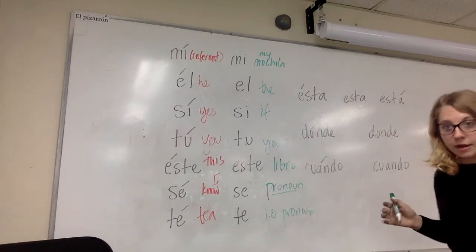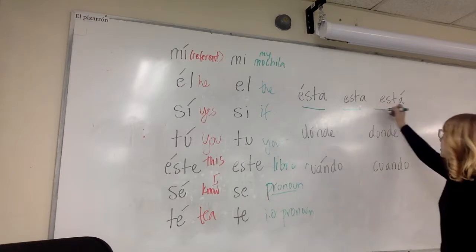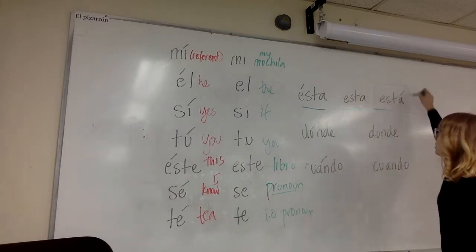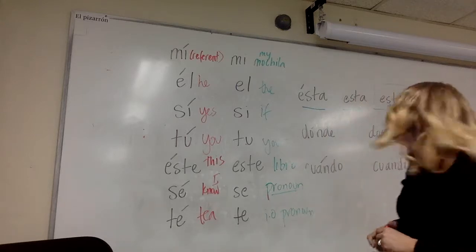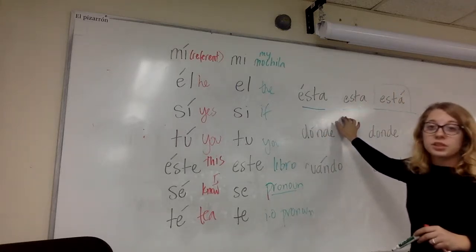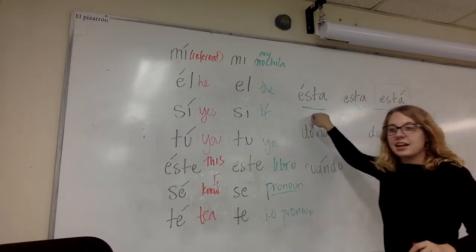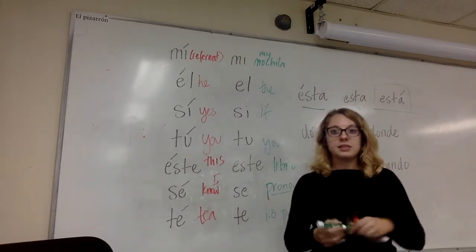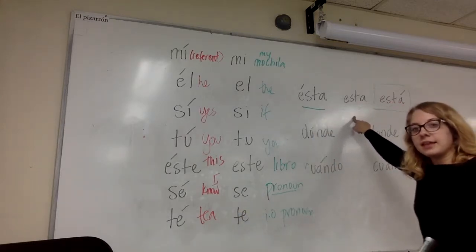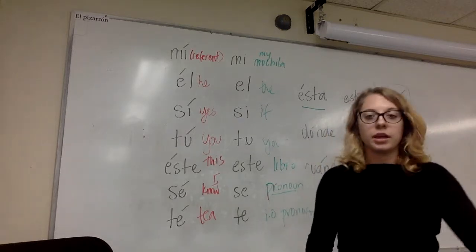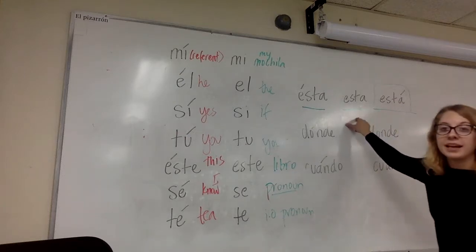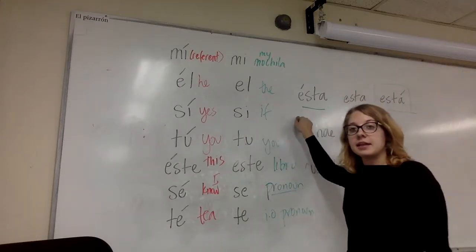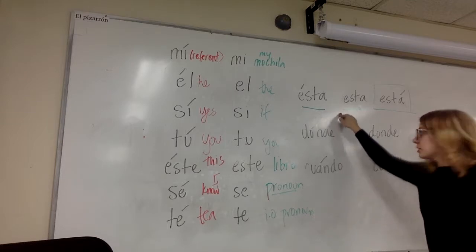Let's look at a triple threat: 'está,' 'ésta,' and 'esta.' There is actually a difference in pronunciation. 'Está' with an accent on the 'a' means 'to be,' as in 'él está en la clase de español.' But 'ésta' and 'esta' are pronounced the same way. 'Ésta,' like 'éste,' is used to say 'this thing' — but feminine — as in 'ésta es mi mochila.' Whereas 'esta mochila es mía' uses 'esta' as a demonstrative adjective modifying the noun. So the accented form acts as a noun, and the unaccented form acts as an adjective.